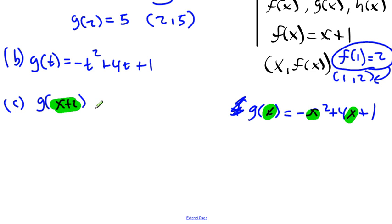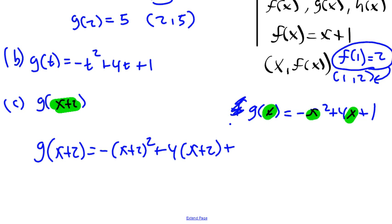So g of x plus 2 equals, again, replace x with x plus 2. So negative, and in parentheses, x plus 2 squared plus, it says right here, 4 times x, or 4 times, I replace x with x plus 2, and then plus 1.